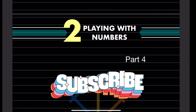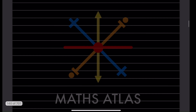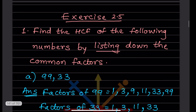Hi learners, welcome to my YouTube channel. Today we are going to do Part 4 of the topic 'Playing with Numbers'. Now let us see the next exercise, that is Exercise 2.5. We have to find the HCF of the numbers by listing down the common factors.